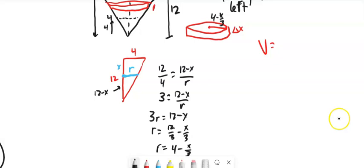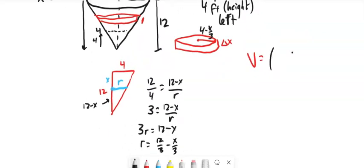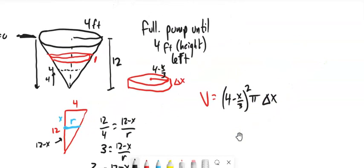The volume is π times radius squared times height: V = π(4 - x/3)²Δx in cubic feet. For water density in feet and pounds, we use 62.4 pounds per cubic foot. So the force is 62.4 times that volume: F = 62.4π(4 - x/3)²Δx.